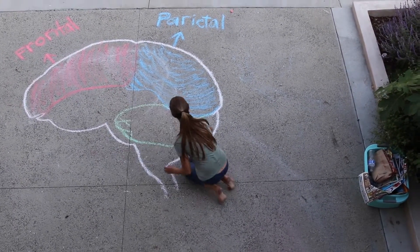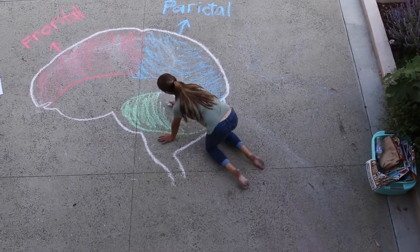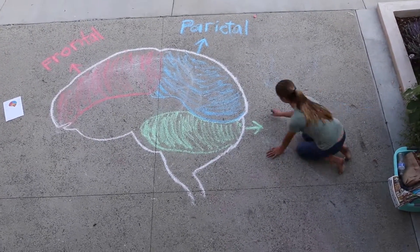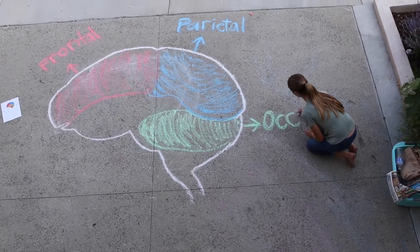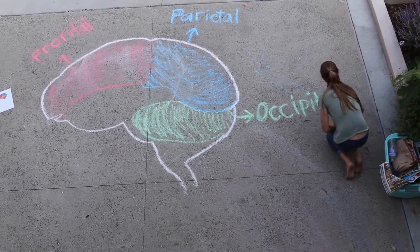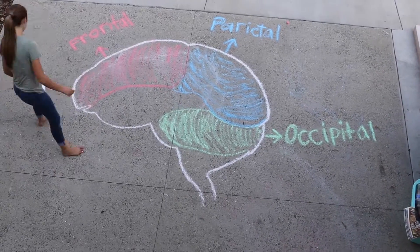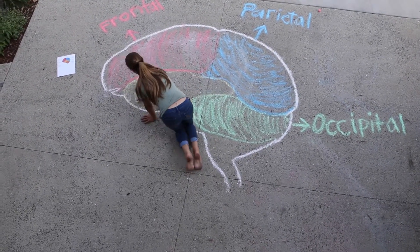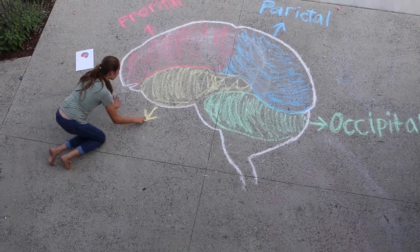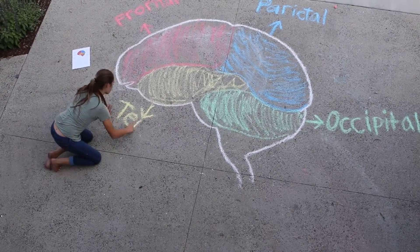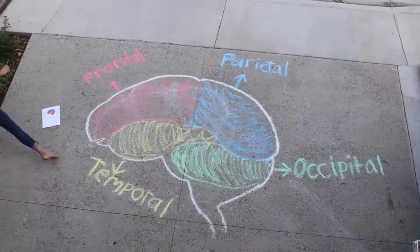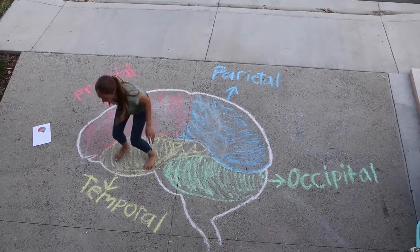The occipital lobe lies at the back of your head and deals with vision. Be careful if you bang the back of your head because you might go blind. The temporal lobe lies roughly above the ears. It includes auditory areas and deals with language, hearing, and memory. Each temporal lobe receives information from the opposite ear. That's all for the four lobes of the brain — remember to be careful with your head. It's very important and it's what makes you you.